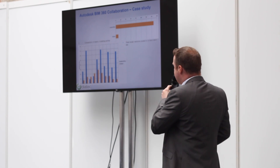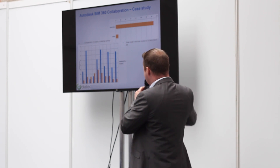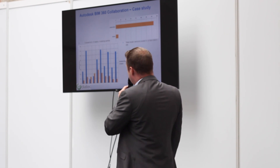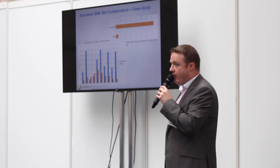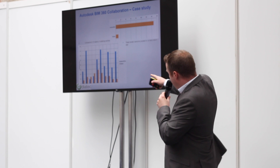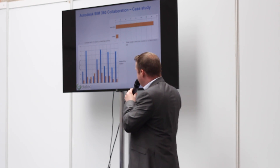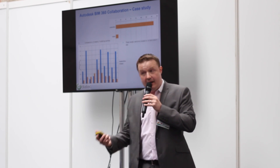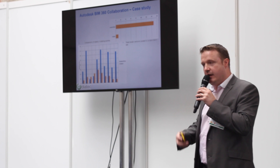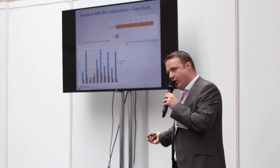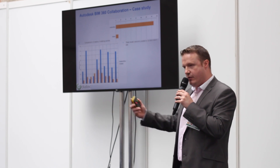Looking at an example from a real project: on a traditional project, total model versions posted to the collaboration site was between 0 and 20. On a BIM 360 Glue project, it was nearly 140 — not 140 different versions, but 140 variations because the model is constantly getting updated and changed, not periodically pushed at random times. Comparing weekly modelling activity, a Glue-based project shows significantly more activity because there's a lot more communication and collaboration happening on a day-to-day, hour-to-hour basis. People aren't waiting for information drops via email or FTP.